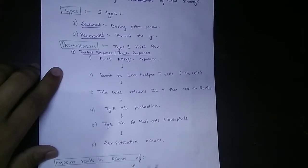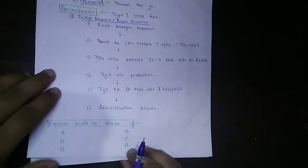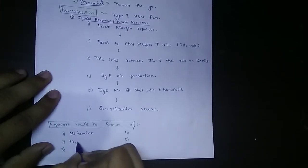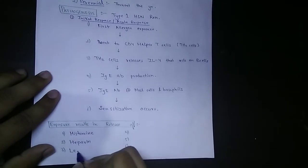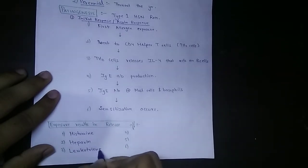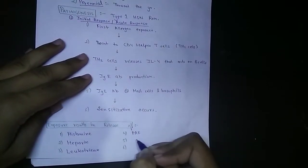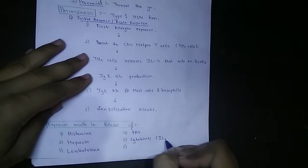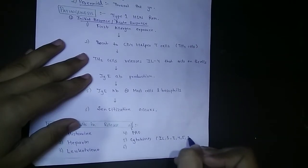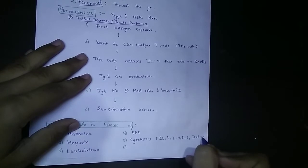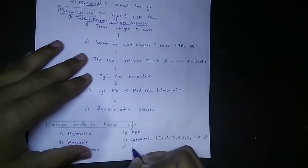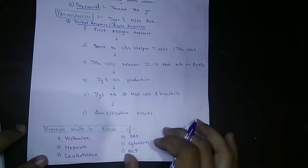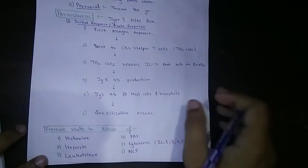After sensitization, six mediators are released: number one is histamine, number two is heparin, number three is leukotrienes, number four is platelet activating factor, number five is cytokines including interleukin-1, 3, 4, 5, 6, and TNF-alpha, and number six is NCF.